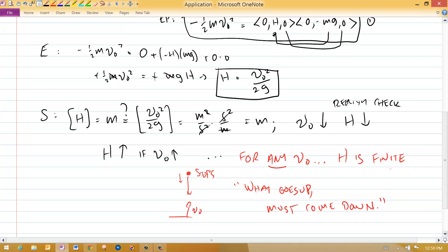must come down. And that may sound reasonable to you, but is that true for any v0 we want to pick, for any launching speed? It's going to be true for any speed that I can use with my arm. If I'm throwing something upwards, the object will always come back down to the earth.